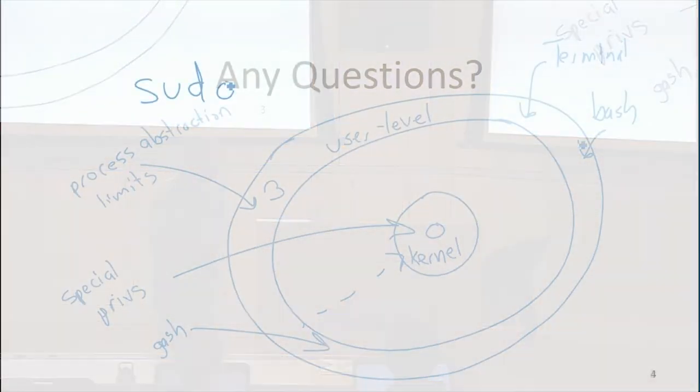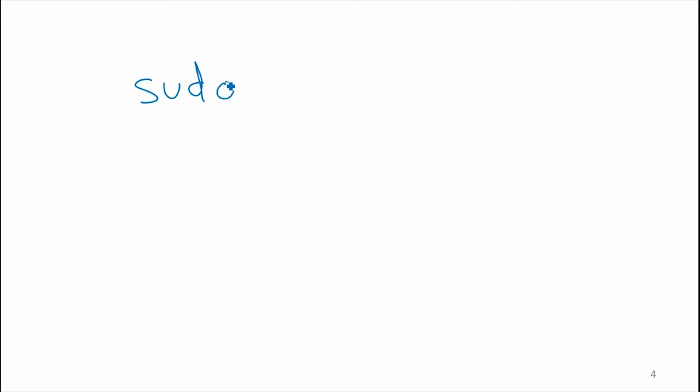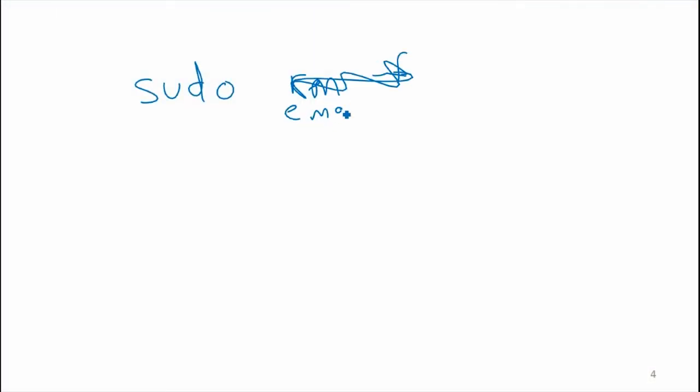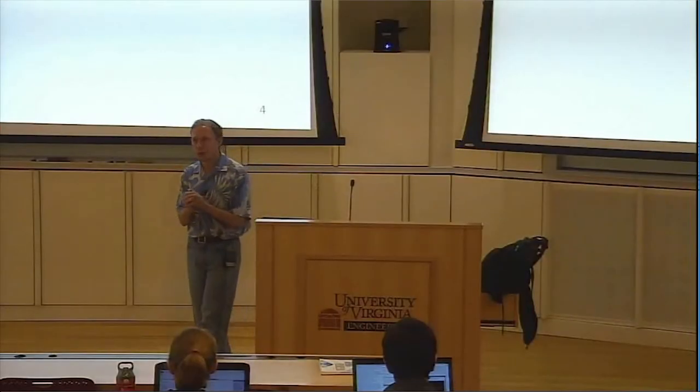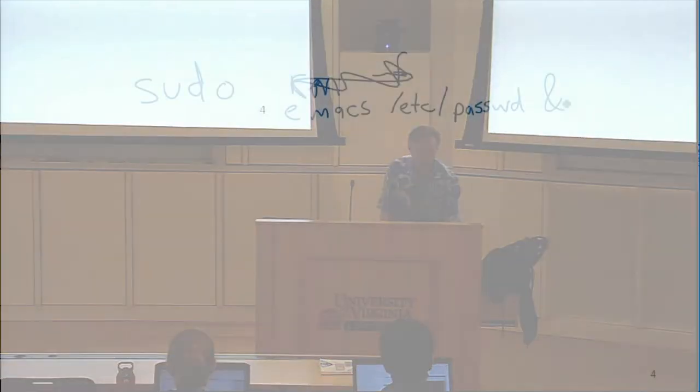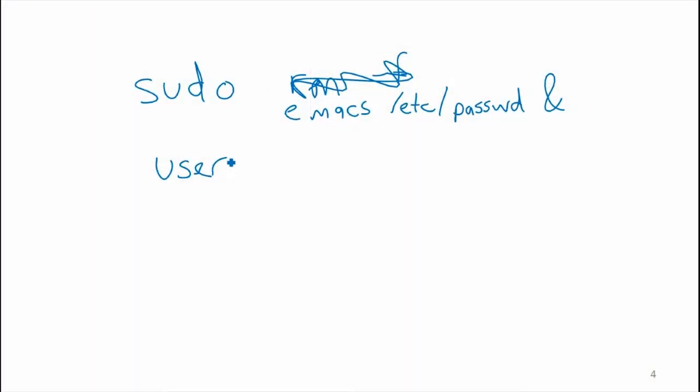So, what does sudo do? Sudo is a Unix command that changes who the user is. So, it makes it so the command that you're running... So, let's say we did sudo and that command. So, what sudo does is change the user that's running. So, if you do sudo, normally it's going to ask you for a password afterwards unless you've already established that you have those credentials. And it's going to change the user. So, the program is still running at user level.